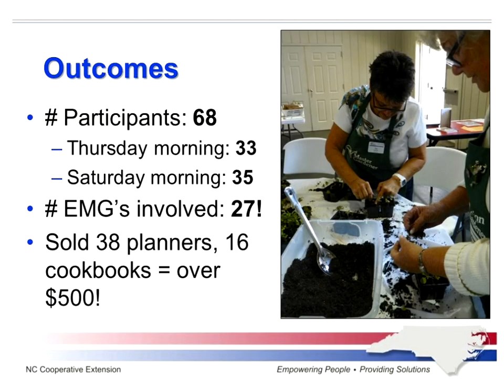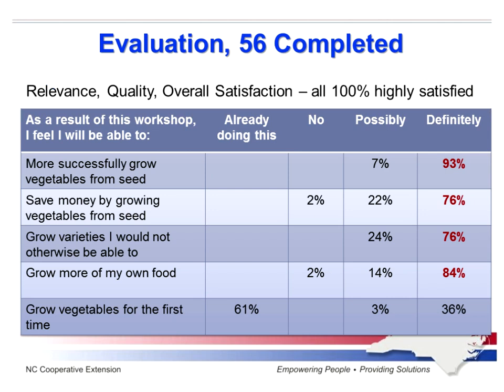We had a total of 68 people participate. We held the workshop twice — once during the week and once on the weekend — and participation was almost the same each time. I had 27 different Master Gardeners involved between the two workshops, most helping hands-on, some with registration, others selling calendars and items. We sold 38 garden planners and 16 cookbooks, raising over $500 for our Master Gardener Association. Of the evaluations handed out, 56 were completed and returned. Everybody — the first time I've ever had this — were 100% highly satisfied with relevance, quality, and overall satisfaction.